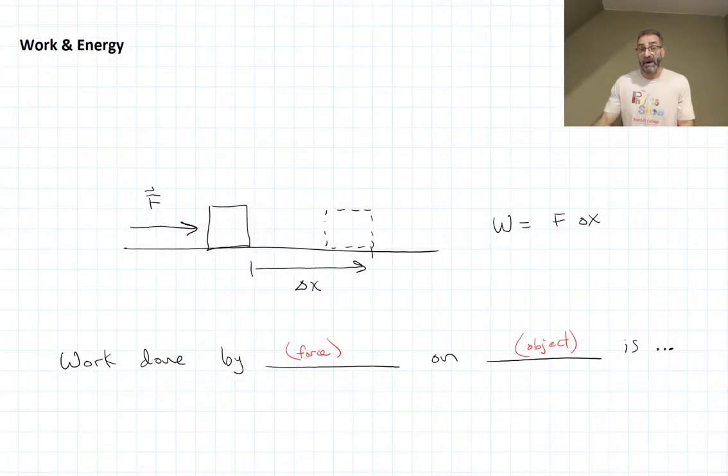If you get in the habit of always saying the work done by some force, in this case it's me pushing on the box, on the object, in this case it's the box, is whatever it is. You always get in the habit of saying that. The work done by gravity on the box. The work done by my pushing force on the box. The work done by friction on the box. If you always get in the habit of saying that, it's quite helpful because something is doing work on something else, and that object's energy must be changing. If work is being done on the object and work tells us about energy transfer, then that object must be changing energy.